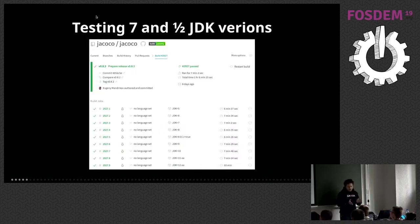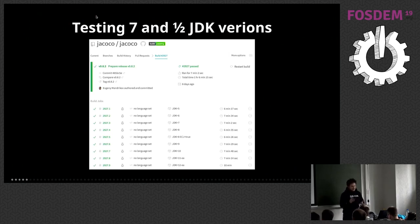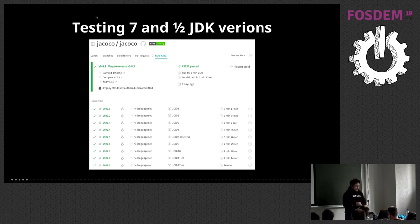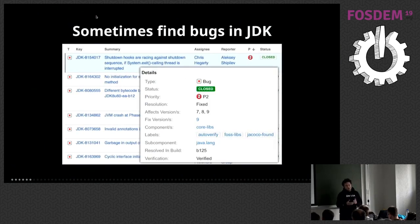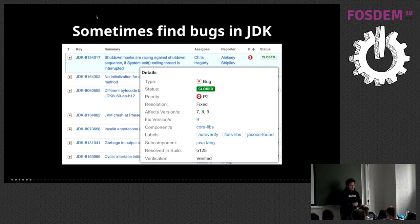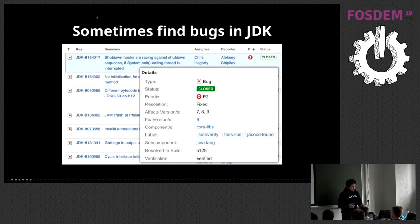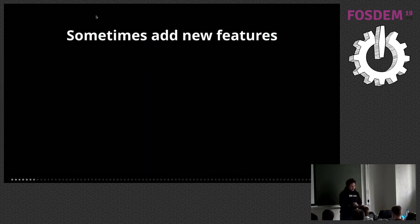During work on these projects, we are testing seven and a half JDKs — now already something like eight and a half because we also test early access builds. Out of all this testing, we sometimes find bugs — and I would say we find bugs not in our product, but in the JDK. And sometimes we develop new features.